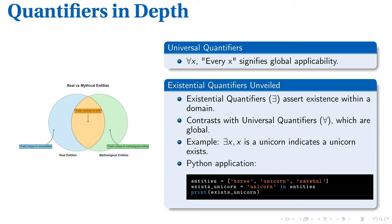In Python, existence tests can be executed. For example, in a list: horse, unicorn, narwhal, if unicorn exists, a corresponding code returns true. Illustrated here is a Venn diagram differentiating real entities from mythological entities with shared traits located in the overlapping region. Understanding the difference and the relationship between these groups enhances our comprehension of these quantifiers' application.